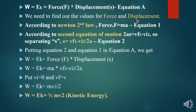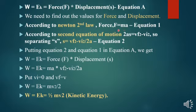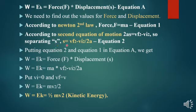From Newton's second law of motion, force F = ma, where m is mass and a is acceleration. This is equation 1. From the second equation of motion, 2as = vf² − vi², so we can isolate s: s = (vf² − vi²) / 2a. This is equation 2.